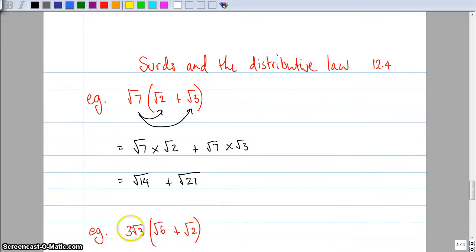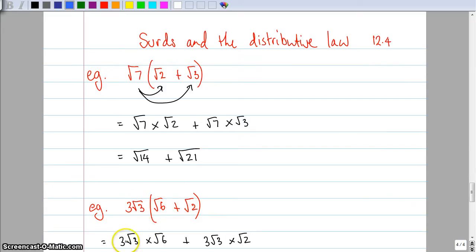Sometimes it's a little bit more complicated because I might have a number in front of the square root sign. So in this case, three root three multiplied by root six plus root two. So I begin to expand this. It becomes three root three times root six plus three root three times root two. And now I just go back to what I was doing back in twelve point two, which is just multiplying the surds together and multiplying the numbers together.